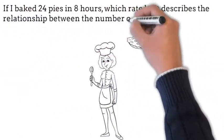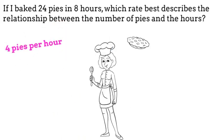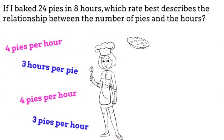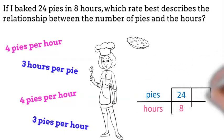If I bake 24 pies in 8 hours, which rate best describes the relationship between the number of pies and the hours? Let's use a graphic organizer.